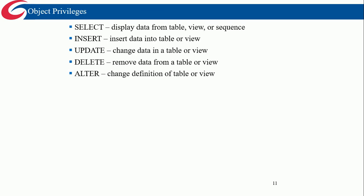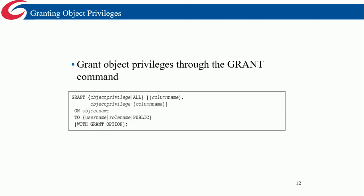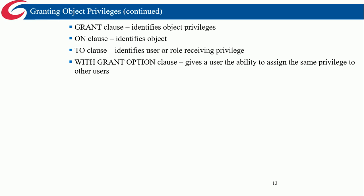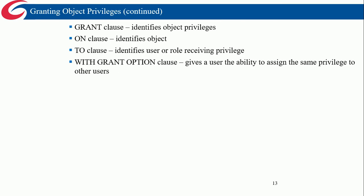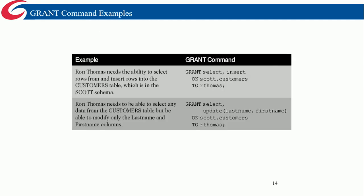Object privileges you can grant include SELECT, INSERT, UPDATE, DELETE, and ALTER, which work on a table or view. To grant object privileges, you type GRANT, the object privilege, optionally a column name, ON some object name, TO some username. It's a little different from granting system privileges because you must indicate what they're allowed to do and which objects they're allowed to do it on, using the ON keyword. The GRANT clause identifies the object privilege, the ON clause identifies the object, the TO clause identifies who, and WITH GRANT OPTION lets the user assign the same privilege to others — that's called discretionary access control.